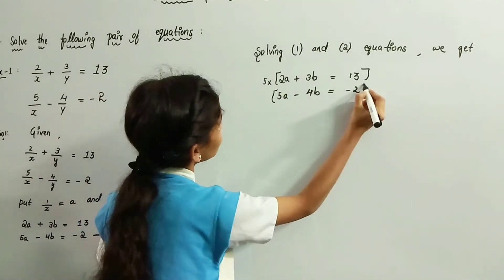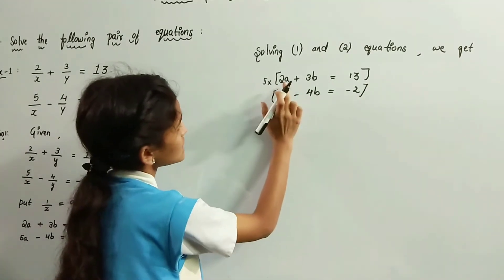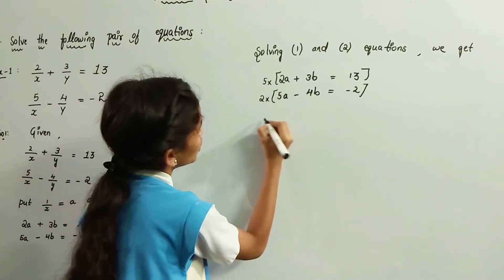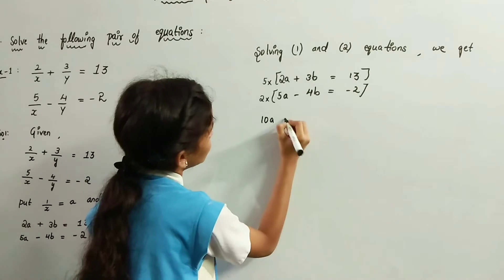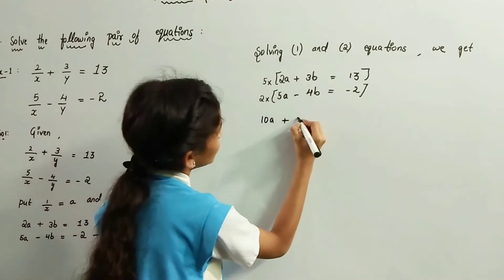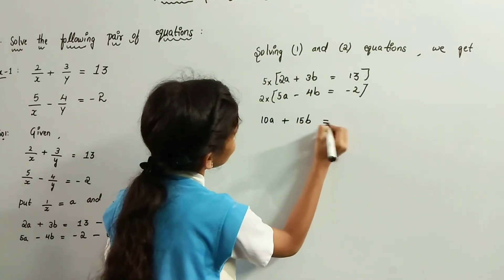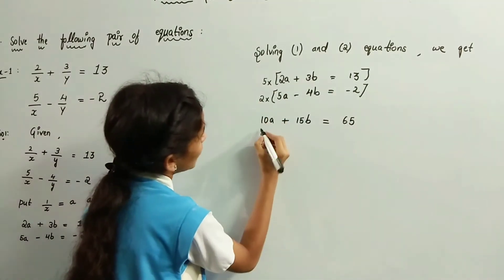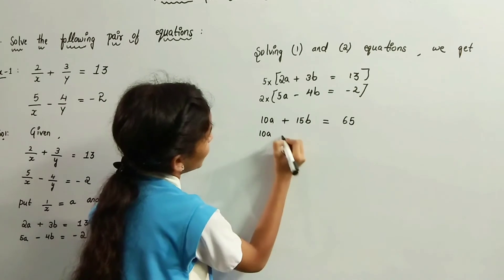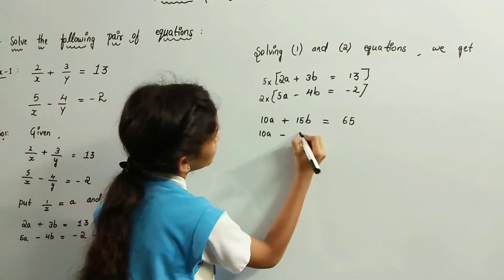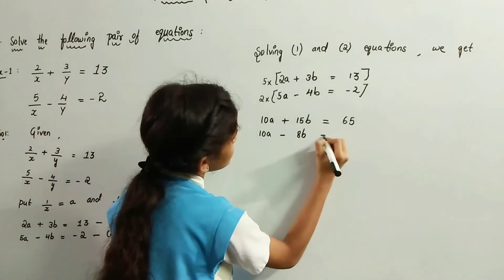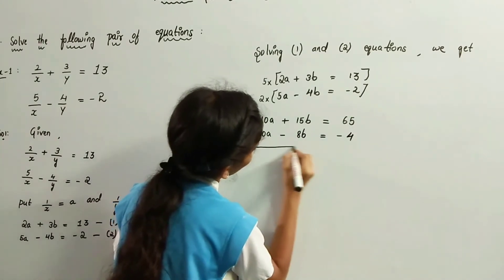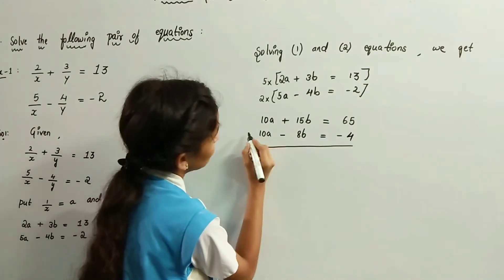Similarly, multiply the second equation with the first equation's first number, that is 2. 5 into 2a is 10a, plus 5 into 3b is 15b, equals 5 into 13, which is 65. 2 into 5a is 10a, minus 2 into 4b is 8b, equals 2 into minus 2, which is minus 4. Now changing signs here.